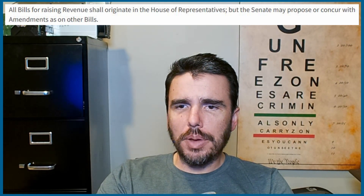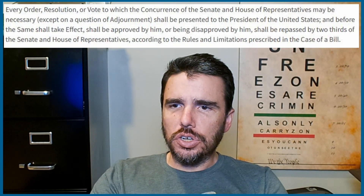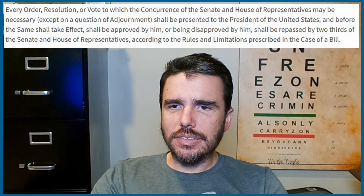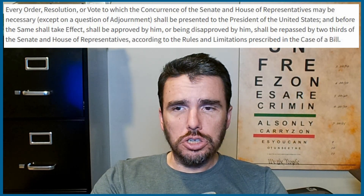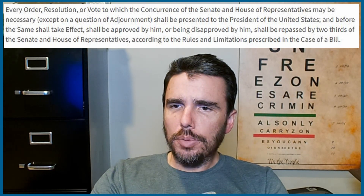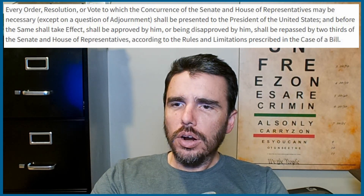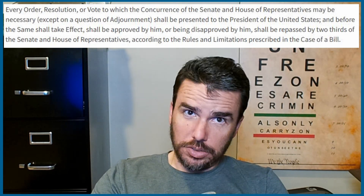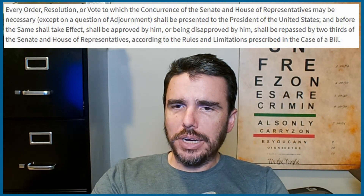Section Seven establishes that all bills raising revenue shall originate in the House of Representatives, though the Senate may propose or concur with amendments. Any bill that involves spending or money starts in the House. Every order, resolution, or vote requiring concurrence of both chambers must be presented to the President, and if disapproved — vetoed — it must be repassed by two-thirds of the Senate and House. That's where veto override authority comes from.